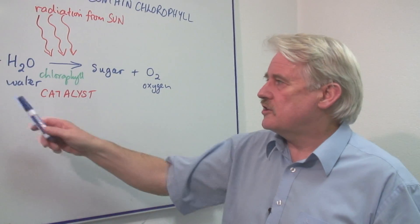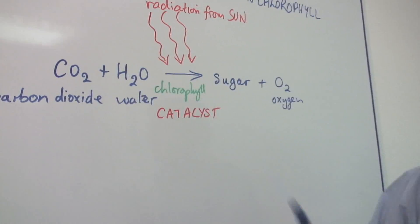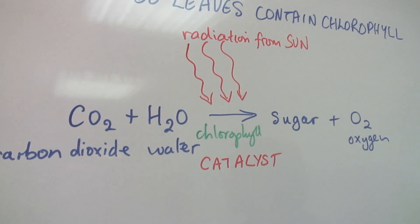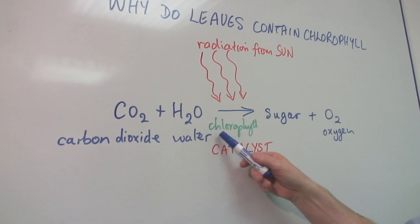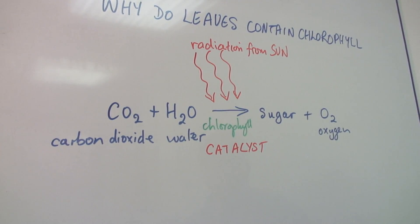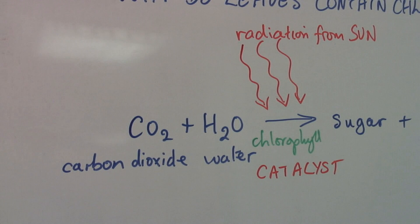So what you need is you need carbon dioxide which comes from the air. You need water which comes from the ground and comes up through the roots. And with the chlorophyll, the green substance in the leaves acting as a catalyst, the radiation from the sun, we create sugars.